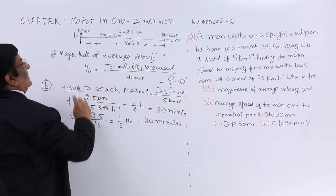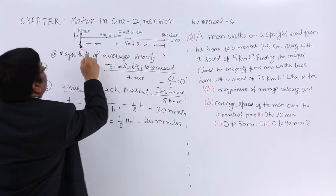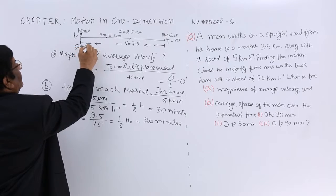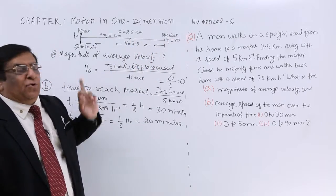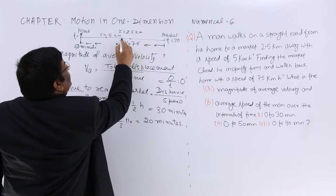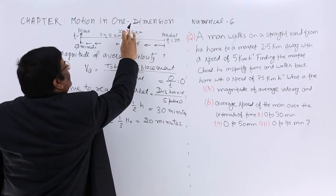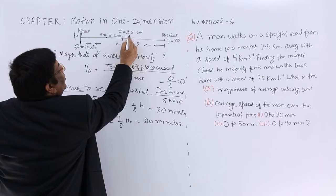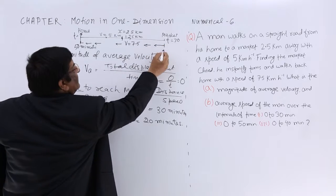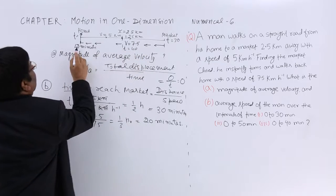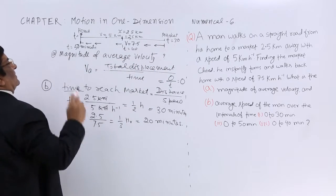From the market to home he takes 20 minutes. So he is at the market at 30 minutes and back home at 50 minutes. Where will he be at 40 minutes? From 30 to 50 is 20 minutes, so 30 to 40 is 10 minutes — exactly halfway back, which is 1.25 km from the market. So: T=0 (home), T=30 (market), T=40 (halfway back), T=50 (home).